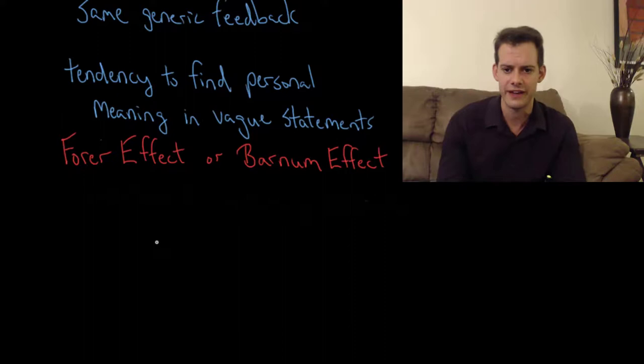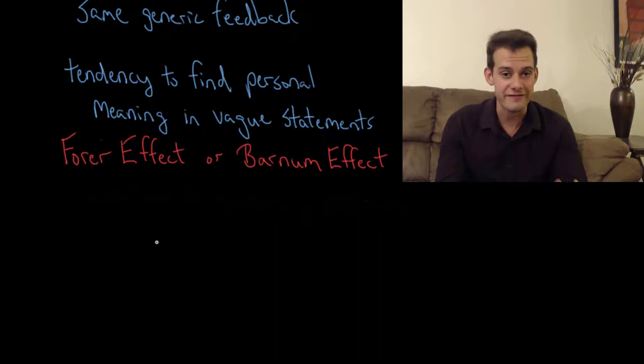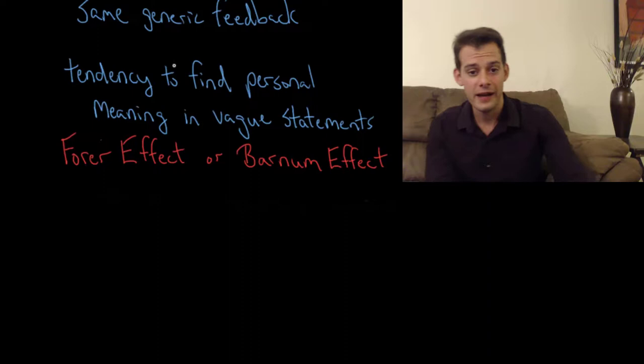And so this is referred to as the Forer effect, this tendency to find personal meaning in vague statements after Bertram Forer. But you'll also see it called the Barnum effect. And this is after P.T. Barnum. And the reason for this is that Barnum's shows were said to have something for everyone. Just like these statements have something for everyone. Everybody can find something in the statement that makes it true for their own life. And others have said well maybe it's the Barnum effect because another quote often attributed to Barnum is there's a sucker born every minute. Maybe that's a little bit more of a pessimistic view of this.